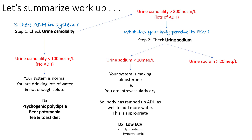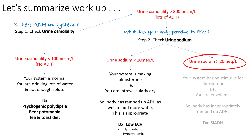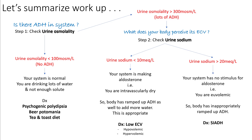This appropriate response is diagnostic of hyponatremia from low effective circulating volume, which is of two types: hypovolemic and hypervolemic. If your urine sodium is more than 20 milliequivalents per liter, your system has no stimulus for aldosterone, meaning you are euvolemic — so your body has inappropriately ramped up ADH. In this case you are looking at SIADH, seen in patients with lung cancer and others. In the next few lectures we will discuss these diagnostics separately.